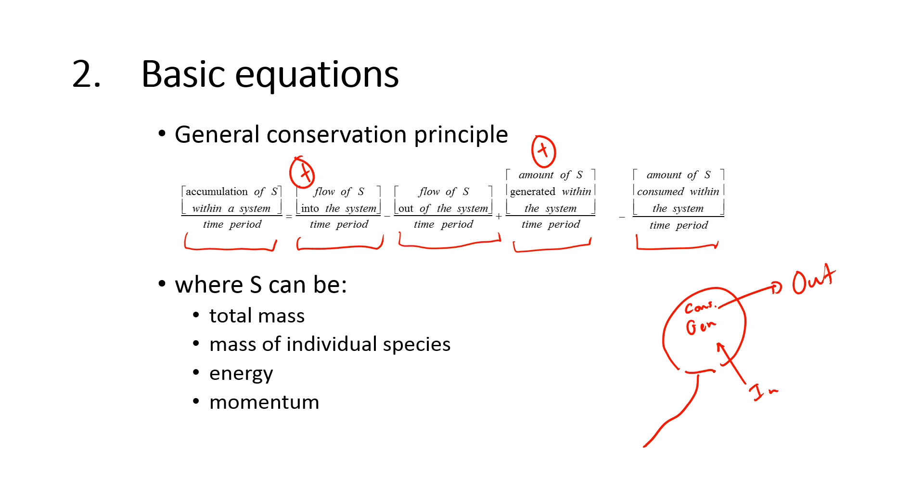then I am going to have the negative signs associated with that. So accumulation equals anything that's going to make the balloon larger is going to have a positive sign, anything that's going to make it smaller is going to have a negative sign. You can do these balances on total mass, mass of individual species, energy, or momentum, or number of individual species as well.